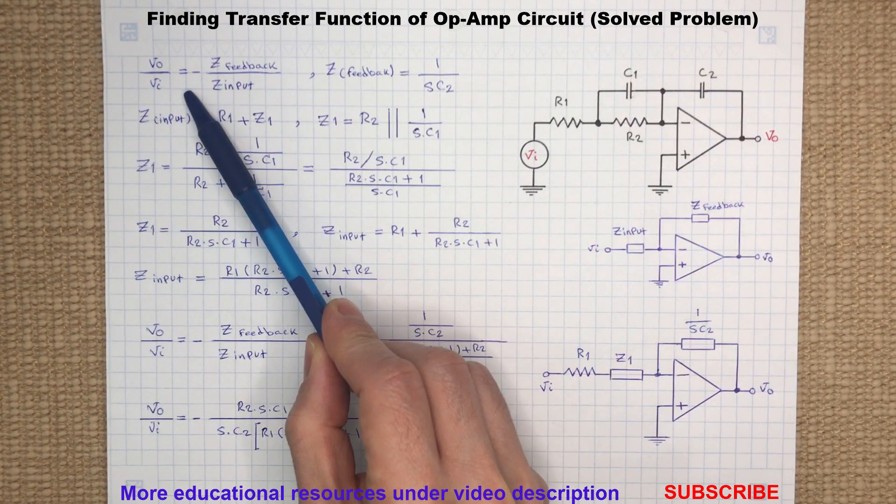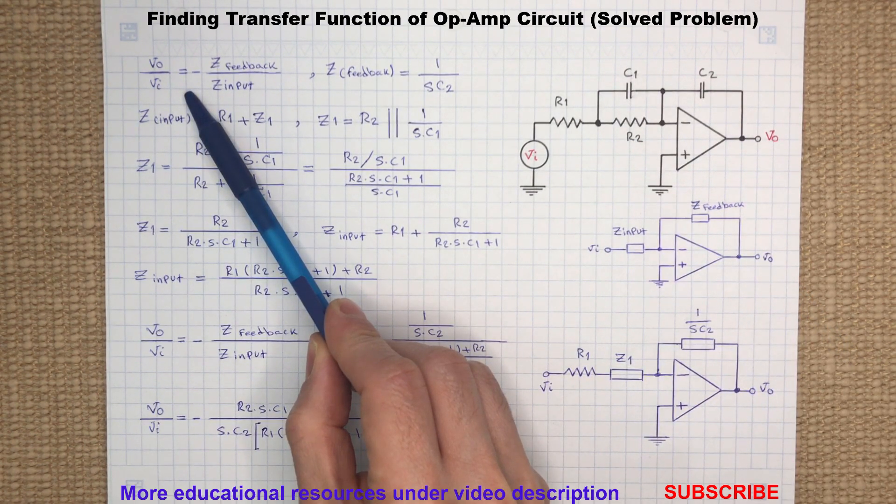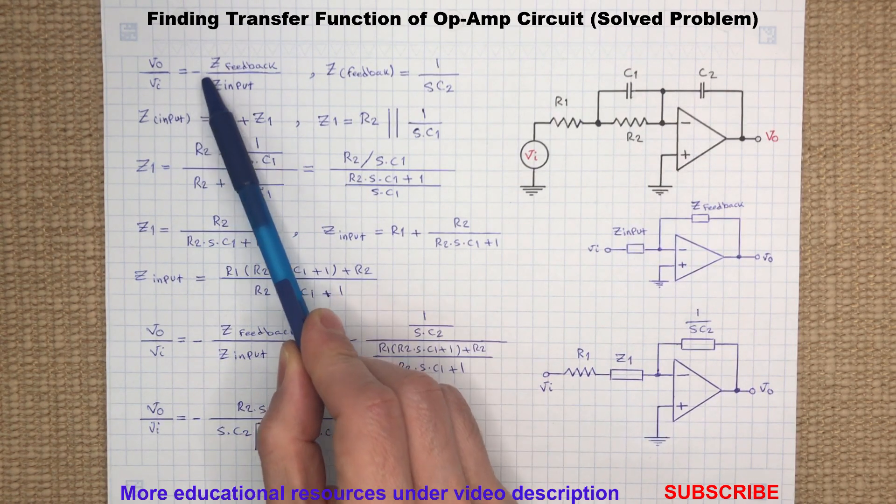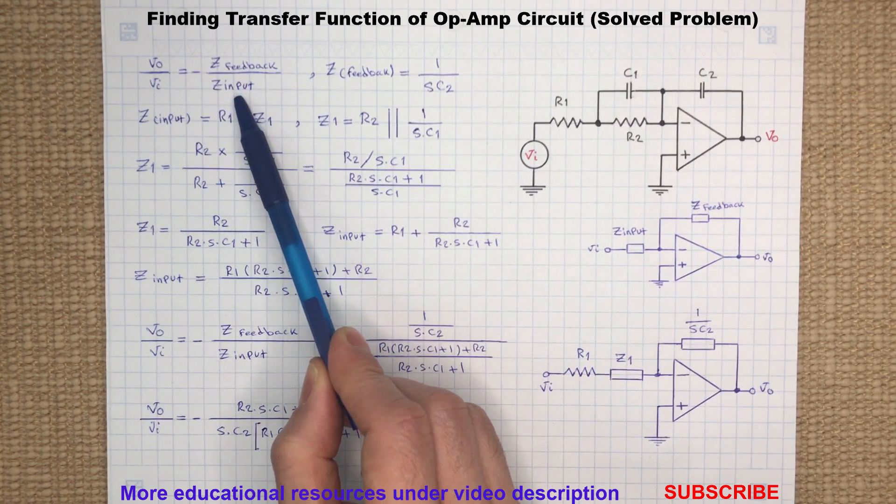As you may recall, the inverting op-amp amplifier has the following voltage transfer function: minus Z feedback divided by Z input.